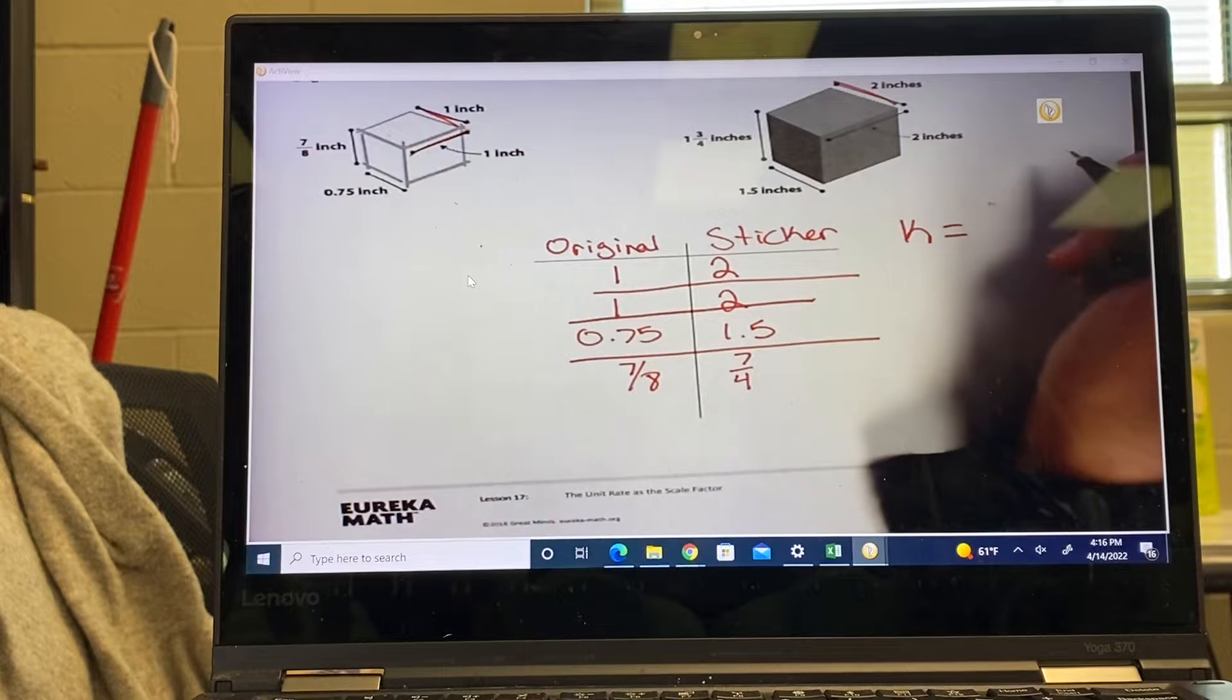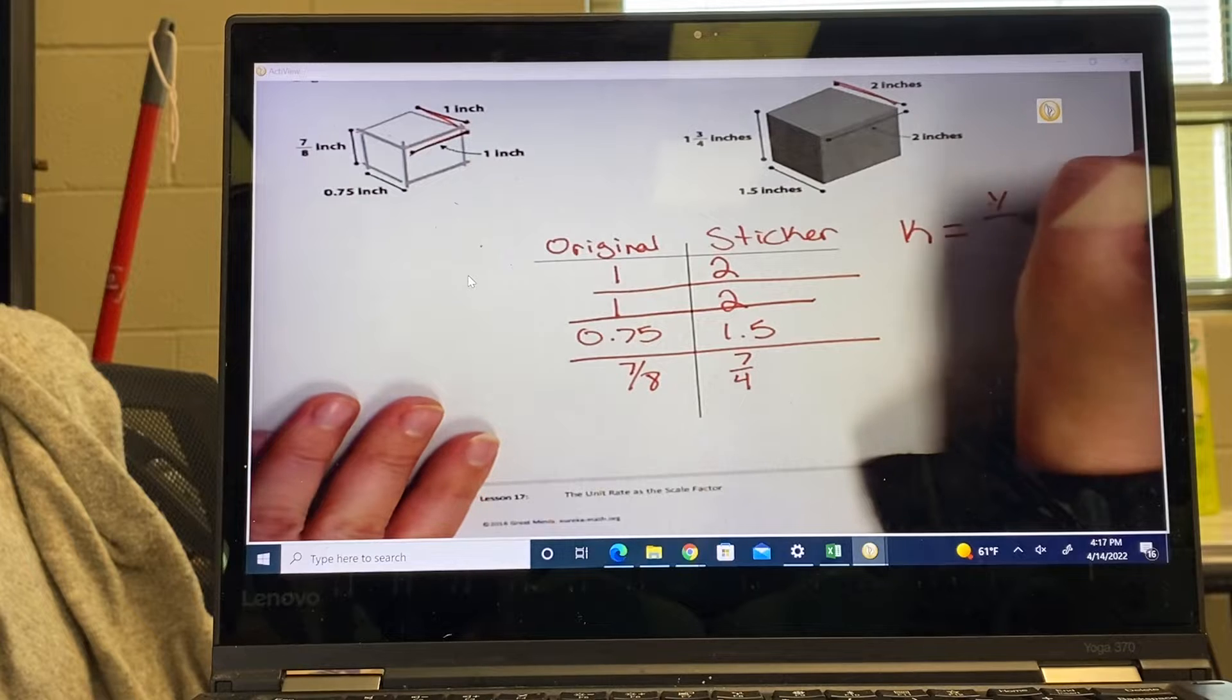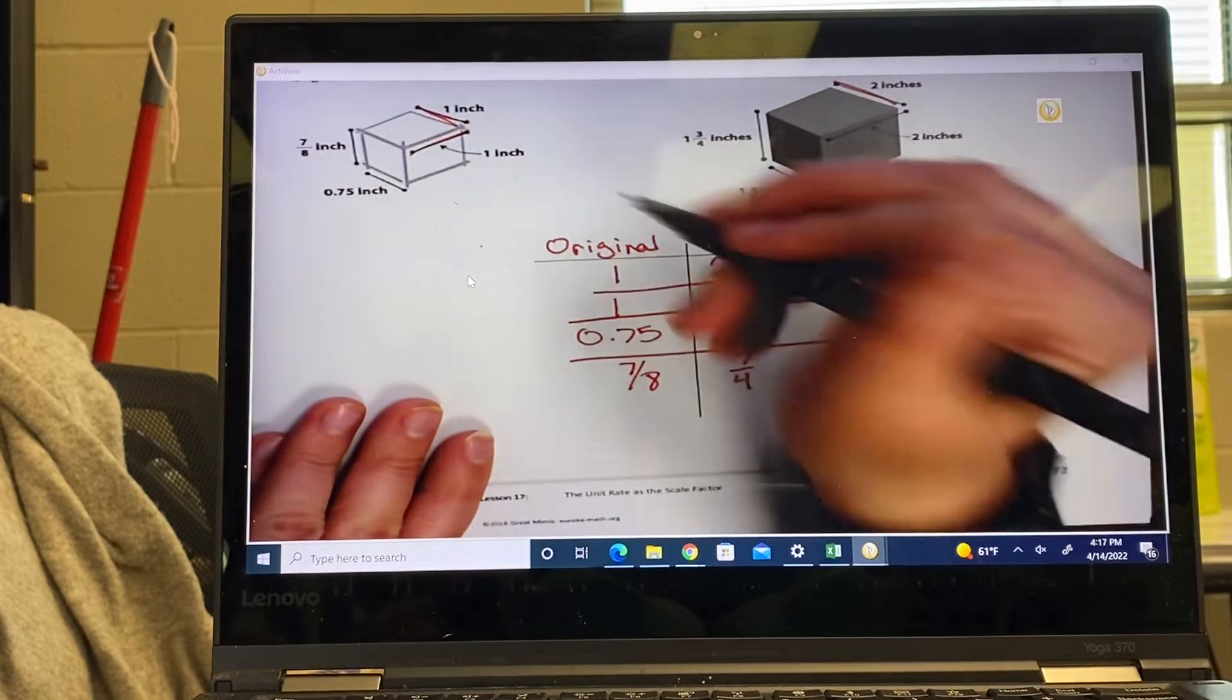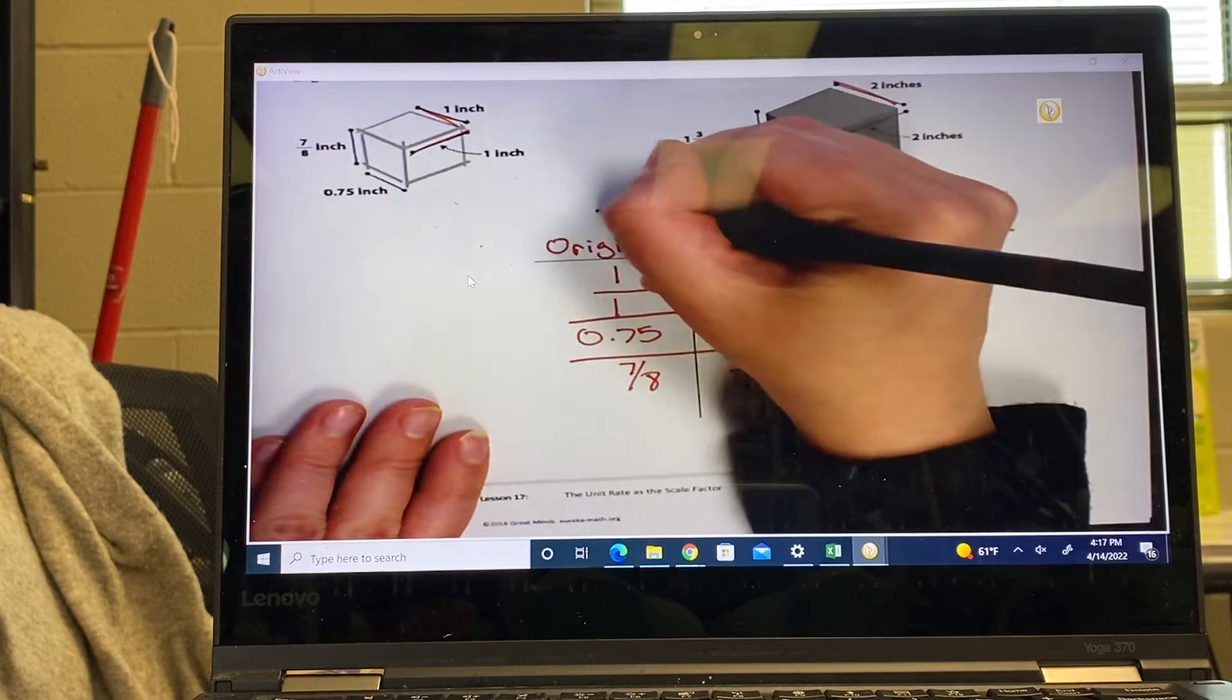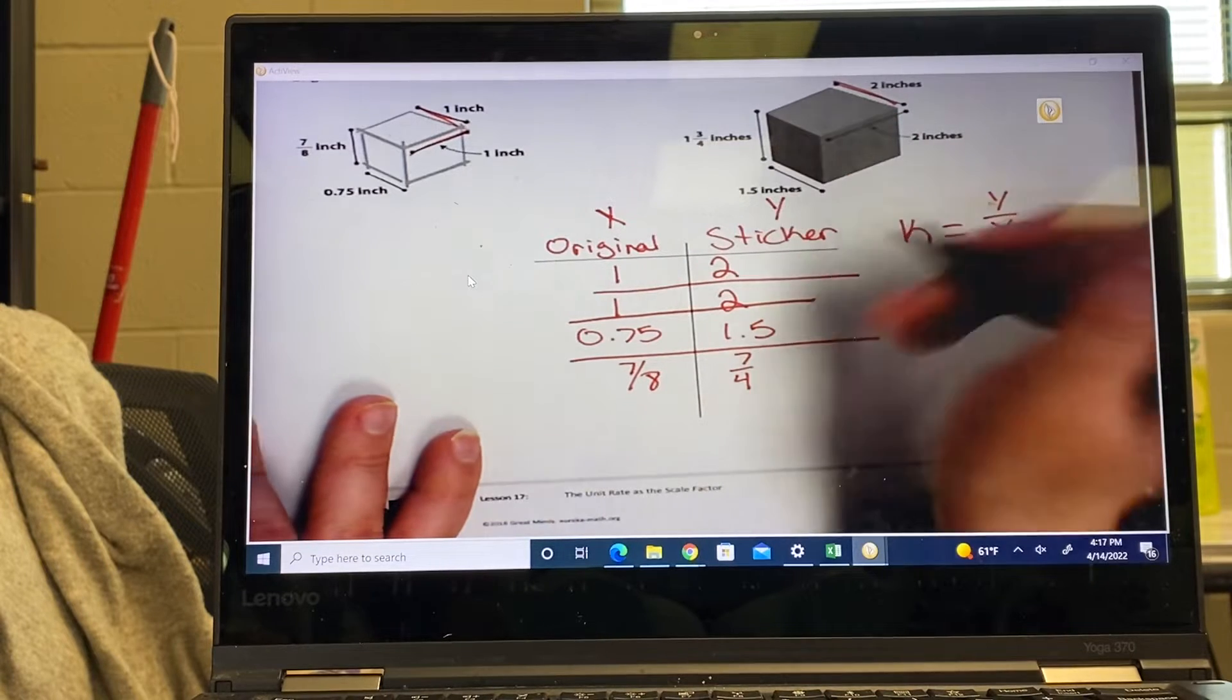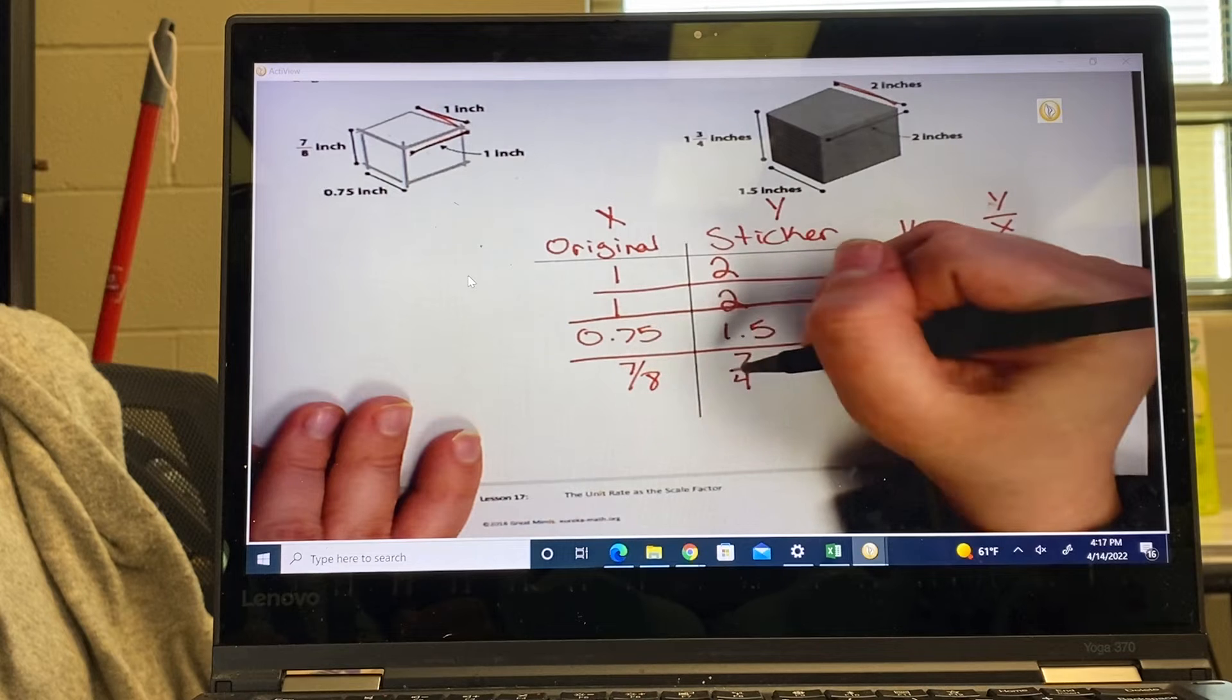Our k for constant always equals what divided by what? You should have said y divided by x. And we're going to say I'm going to do my original is my y, so I'll make that my x. They'll make it easier. And my sticker my y. So we're going to do this for all four to make sure that they're all two.